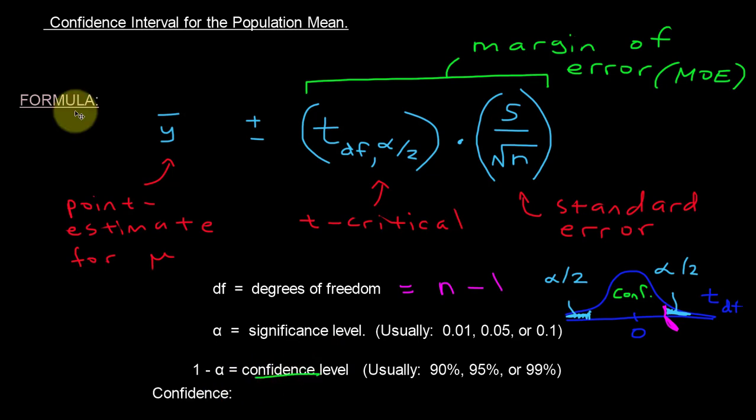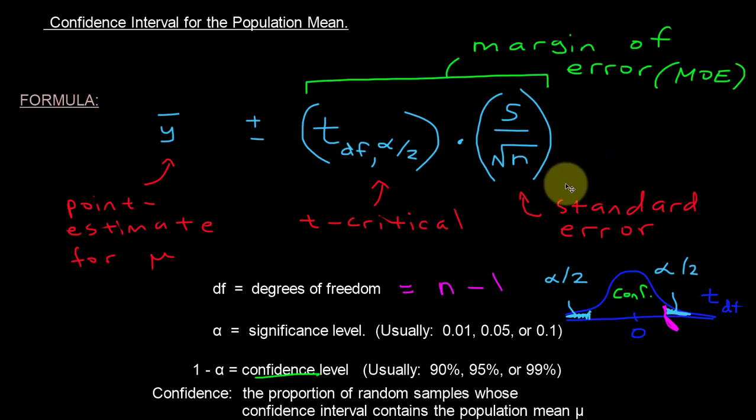What confidence refers to is the proportion of random samples in which the associated confidence interval will contain this parameter that we are estimating. So it is usually a larger percentage or proportion because we want to capture our parameter in this interval most of the time.